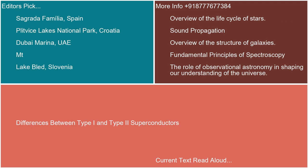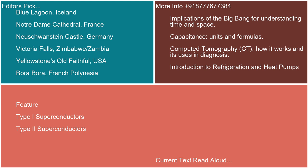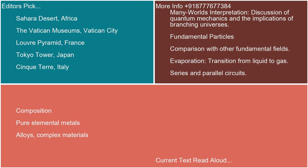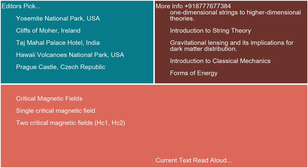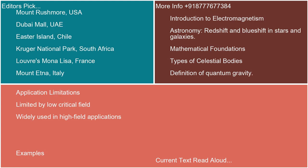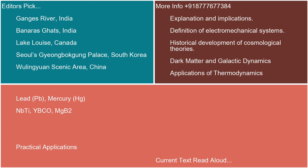Differences between Type I and Type II superconductors. Composition: Type I — pure elemental metals; Type II — alloys and complex materials. Meissner effect: Type I — complete expulsion of magnetic fields; Type II — partial expulsion, allows magnetic penetration. Critical magnetic fields: Type I — single critical magnetic field; Type II — two critical magnetic fields, HC1 and HC2. Application: Type I — limited by low critical field; Type II — widely used in high-field applications. Examples: Type I — lead (Pb), mercury (Hg); Type II — NbTi, YBCO, MgB2.